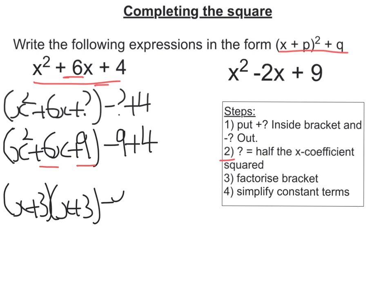Lastly we simplify the constant terms. Well x plus 3 and x plus 3 is just x plus 3 squared and minus 9 plus 4 is minus 5. So there's our answer.